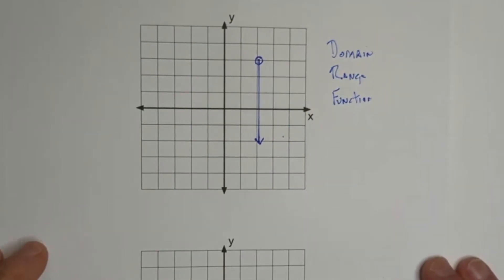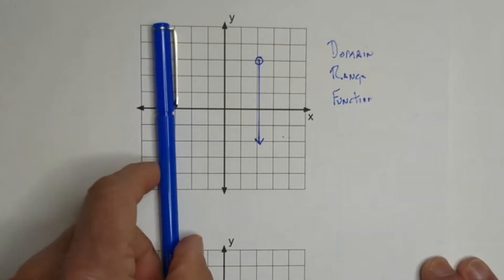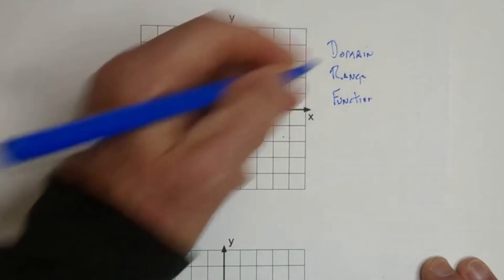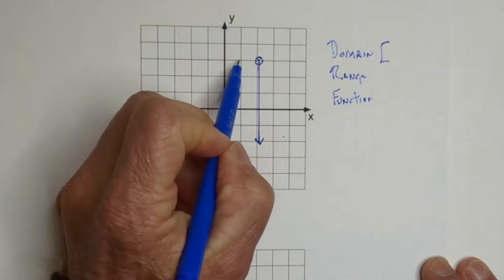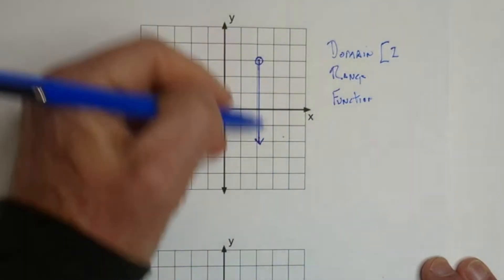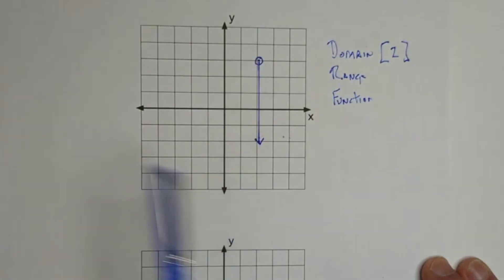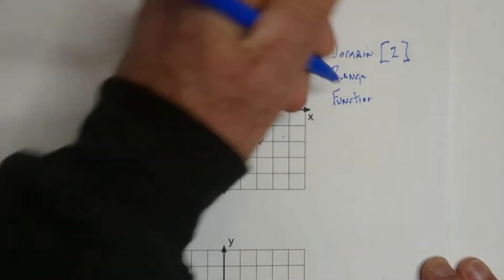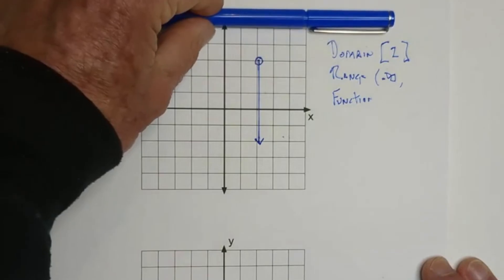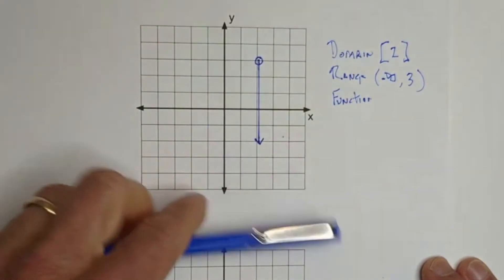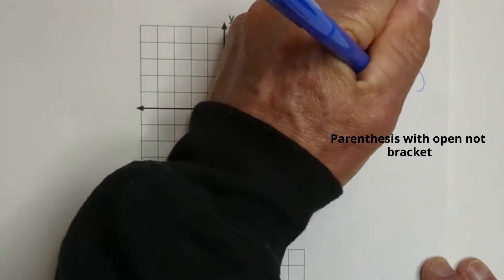Now we have one that's a bit different — let's follow the same procedure. For the domain, moving from left to right, we hit a straight line at positive two. Moving from the right we get the same thing, so it's only one value. It's a straight line, so we use brackets: the domain is [2, 2]. For the range, moving up we see an arrow, so that's negative infinity. Moving down, it's open at negative three, so we use a parenthesis. The range is (-∞, -3). And is it a function? Absolutely yes.